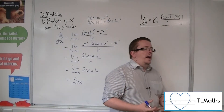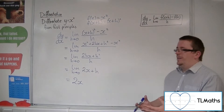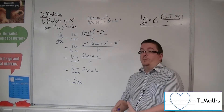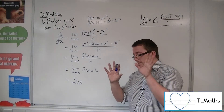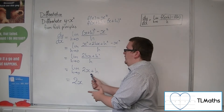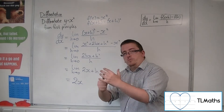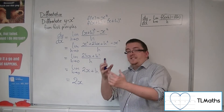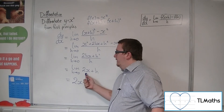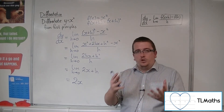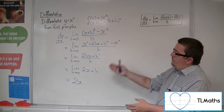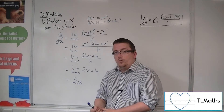The h — and this is a really bad form to say it — the h is kind of substituted for 0, but that's a really bad way of saying it. What you've got to imagine is that h gets smaller and smaller and smaller until it is negligible, and so it makes no difference to what else is there.